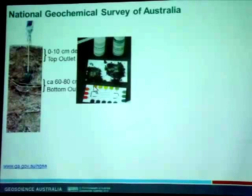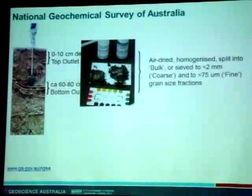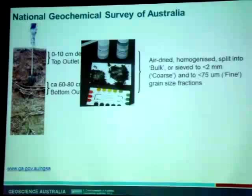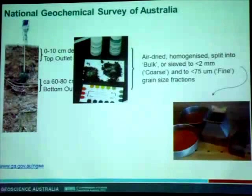We did some field testing for pH and reported Munsell color in the field, along with some other observations and photographs. Back in the laboratory, all samples were treated at Geoscience Australia in the same place. The samples were air-dried and homogenized, then split in half using a riffle splitter. Half the sample was put into archive for future analyses, and the other half was used for chemical and other analyses for this project.